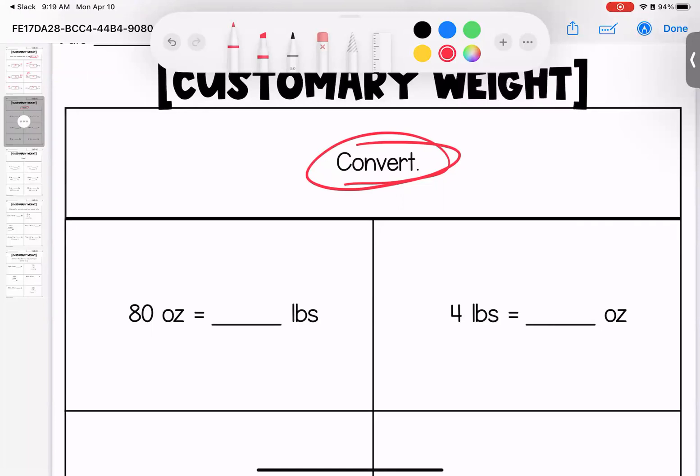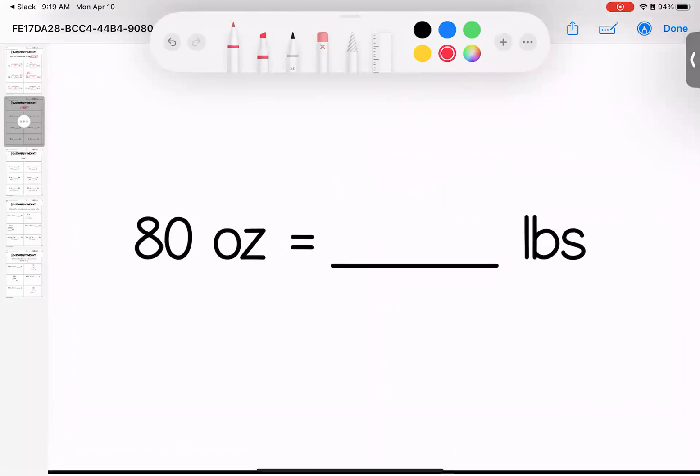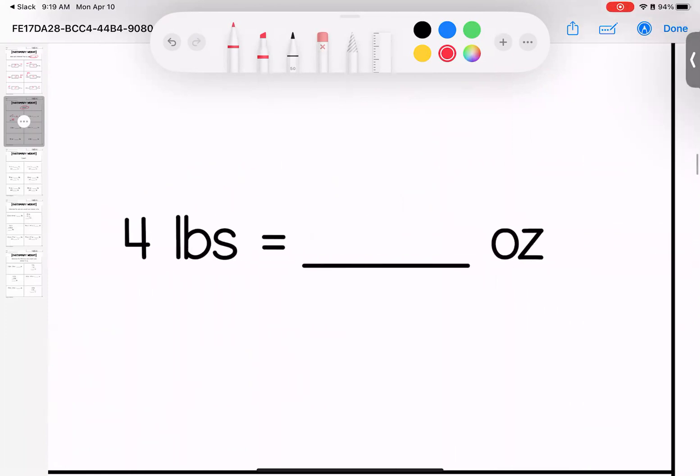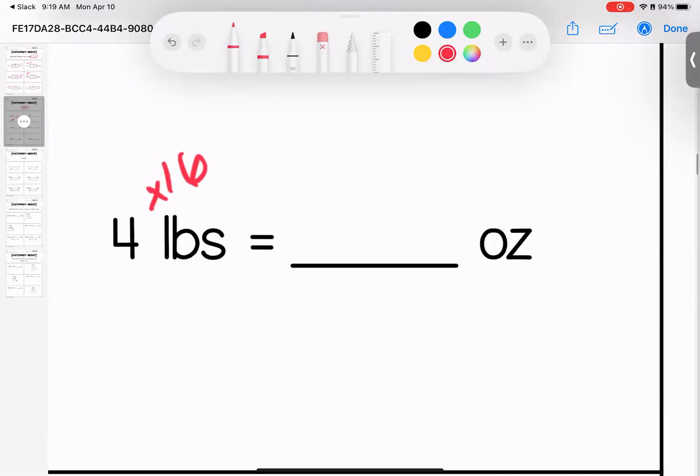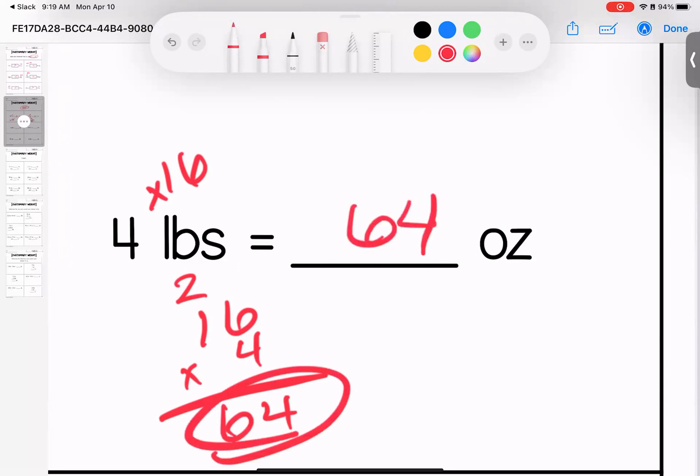All right, doing direct conversion on page number two, which means we have to use our converter facts. Remember, if they are hard for you to remember, they are in the printable in the classroom. So here we go. 80 ounces. How many pounds is that? Well, there's 16 ounces in a pound, which means I have to divide, or I can use guess and check multiplication. 80 divided by 16 leaves me with five pounds. Over here, four pounds. How many ounces is that? There's 16 ounces in a pound. So if I set these up to multiply, six and four is 24, four and one is four, add two is six, 64 ounces.